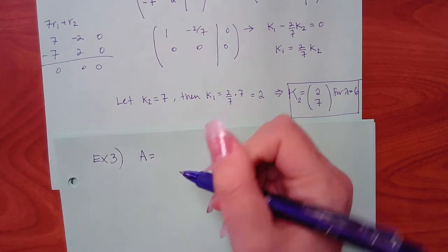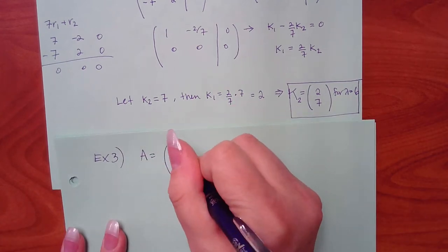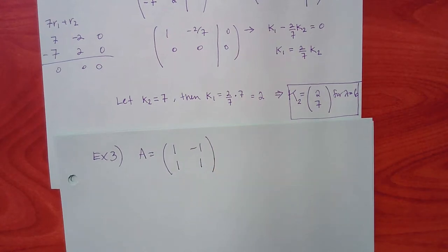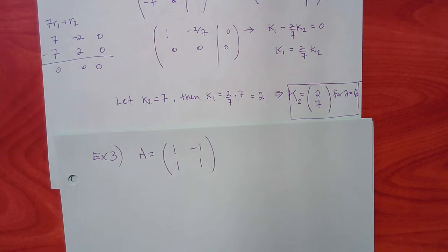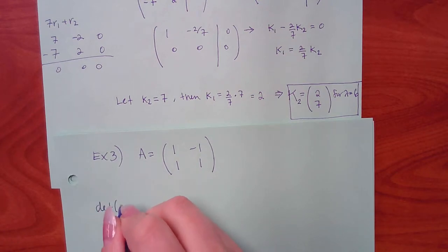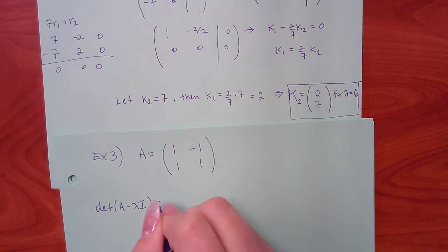Still sticking with 2×2 matrices for now — no 3×3 yet. Example 3: we compute det(A minus lambda I) equals zero. The diagonal entries get minus lambda: 1 minus lambda and 1 minus lambda; off-diagonal entries stay the same.